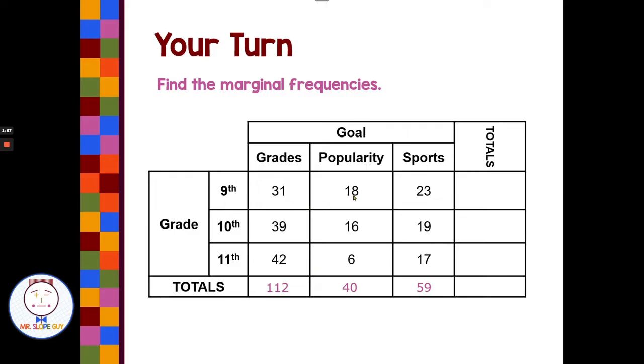For ninth grade, 31 plus 18 plus 23, we get 72. We add up the row for 10th grade. We add up the row for 11th grade. And then we can find our overall total, in this case, of 211. And this is just finding marginal frequencies for a two-way table or a contingency table.